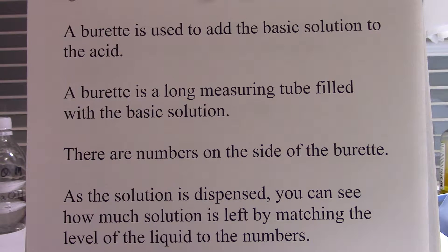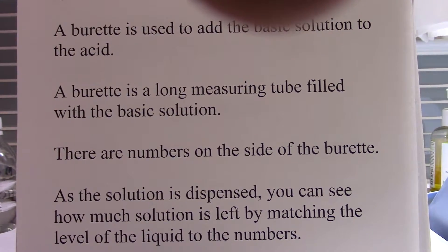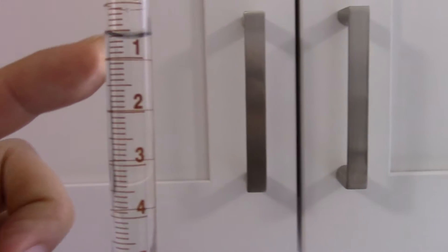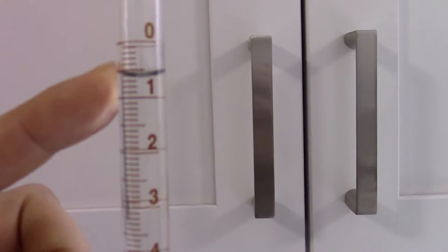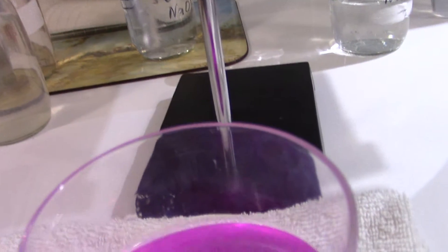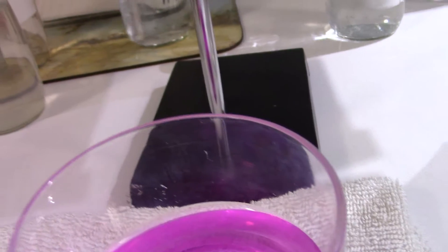So this is a burette — a long glass tube filled with sodium hydroxide. If we look closely, you can see there are numbers along the side. The liquid inside shows the level of sodium hydroxide, and the sodium hydroxide comes out of this tip here. It is used to deliver sodium hydroxide to the acid that we're going to titrate.